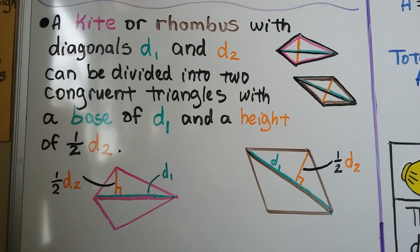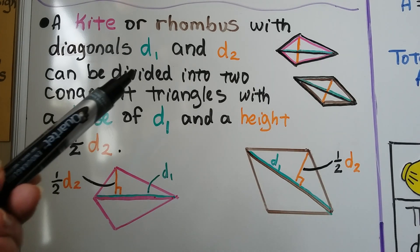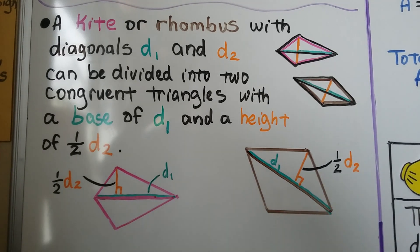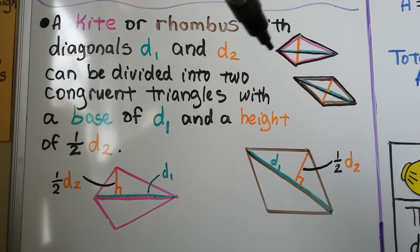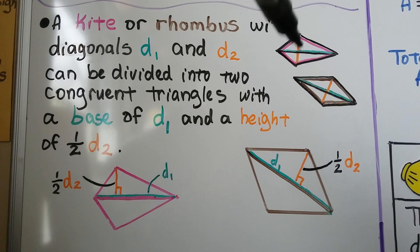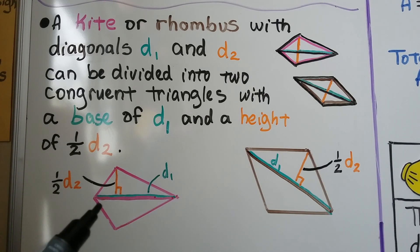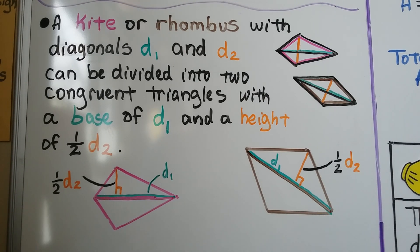A kite or rhombus has two diagonals: d1 is diagonal 1 and d2 is diagonal 2. The green one is one diagonal and the orange one is another diagonal, same with the rhombus. They can be divided into two congruent triangles with a base of d1 and a height of half d2.